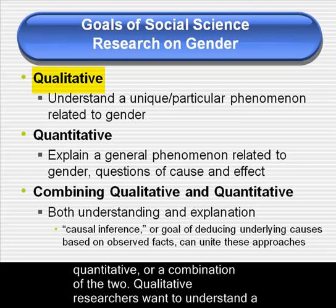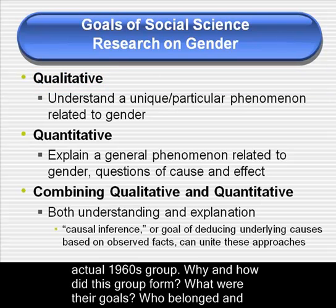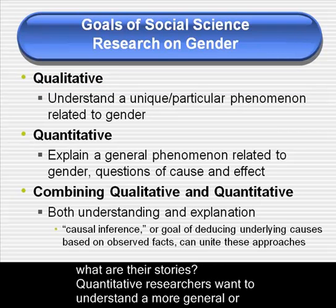Qualitative researchers want to understand a unique phenomenon connected with gender. For example, take the New York Radical Women, an actual 1960s group. Why and how did this group form? What were their goals? Who belonged and what are their stories?